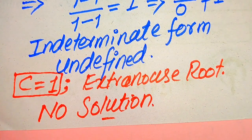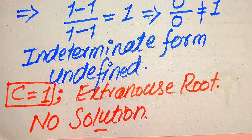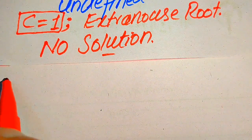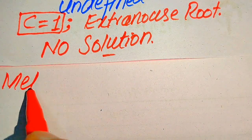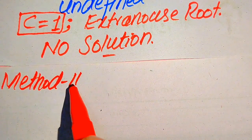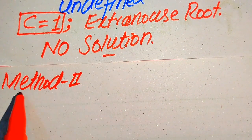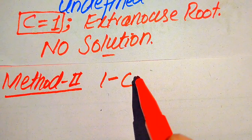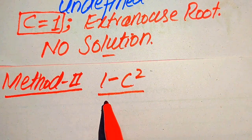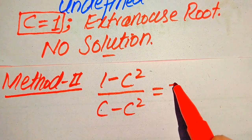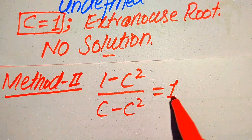Now we solve this problem using the second method. In the second method we again copy down the given question statement: 1 minus C square divided by C minus C square is equals to 1.